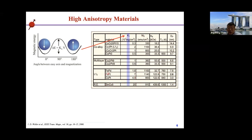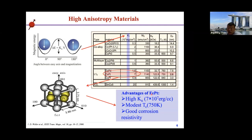Another candidate is the L10 phase FePt, whose magnetic crystal anisotropy is 7 × 10⁷ erg/cm³. The smallest allowed grain size is about 2.6 nm in diameter. The advantages of L10 FePt are: high anisotropy, moderate Curie temperature suitable for HAMR laser heating, and good corrosion resistivity — which relaxes the requirements for the overcoat layer to protect the media.